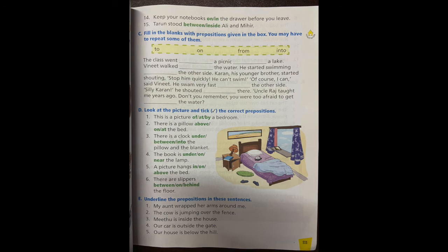Vineet walked dash the water. Vineet walked into the water. Write down. He started swimming. He started swimming dash the other side. On the other side. Oh and on. Karan, his younger brother, started shouting: stop him quickly, he can't swim. Of course I can, said Vineet.